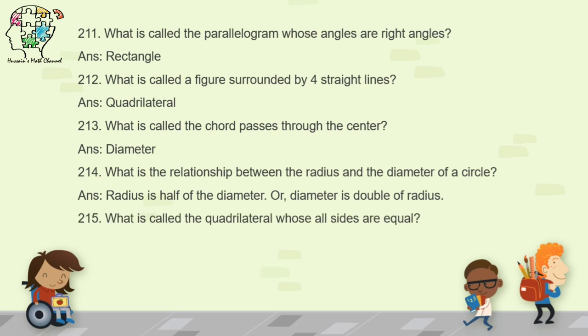Question 215: what is called the quadrilateral whose all sides are equal? There are two types — one is called a square and the other is a rhombus. You can write either one as the answer.